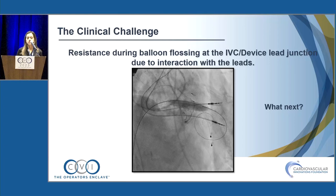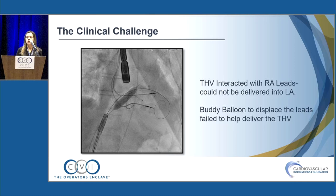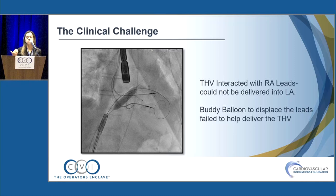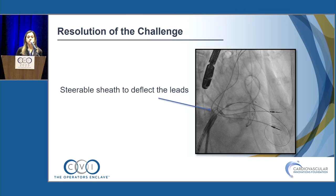The clinical challenge: when they deployed a 12×40 mm Evercross balloon for balloon septostomy, there was resistance during balloon flossing at the IVC-device-lead junction due to interaction with the leads. They tried crossing a second wire parallel to the Safari wire and introduced the Evercross balloon as a buddy balloon to displace the lead, but that didn't help. They also tried increasing the balloon from 12 to 16 mm, but that also continued to cause resistance.